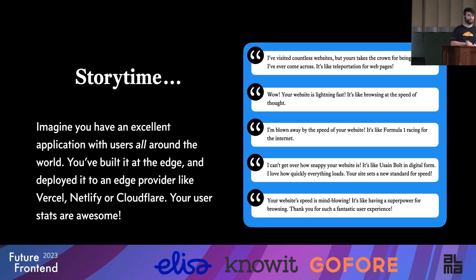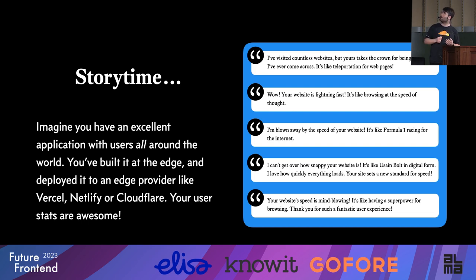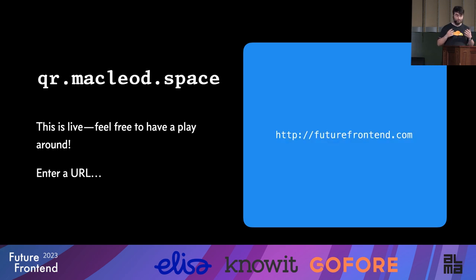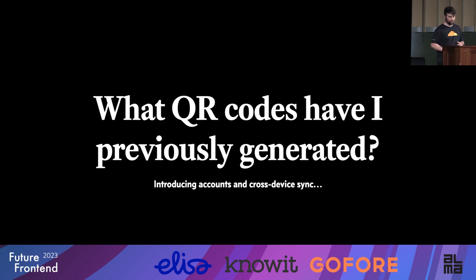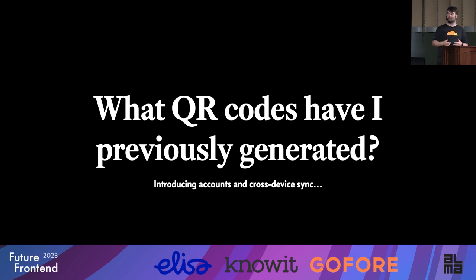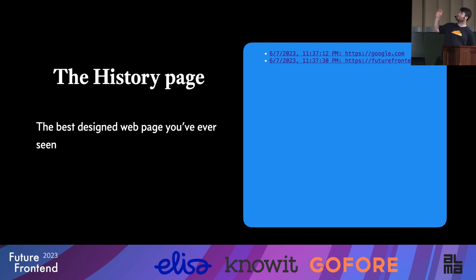Story time. Imagine you have an excellent application with users all around the world. You built it at the edge and deployed it to Vercel, Netlify, Cloudflare, or some other edge provider. Your user testimonials are awesome — here are a couple I wrote with ChatGPT: 'Blown away by the speed of your website. It's like Formula One racing for the internet.' Here is a very simple live application. It has two pages: you enter a URL, and you get a QR code. That QR code links to the URL. The problem: how can users see what QR codes they've previously generated? If you go every week and enter a new URL, you might want to see what URLs you entered last week. That requires accounts, cross-device sync, and data at the edge.